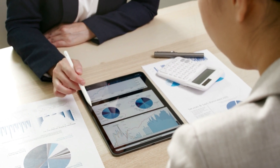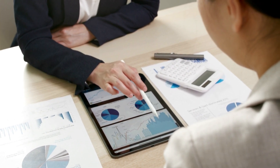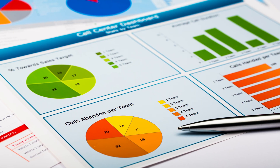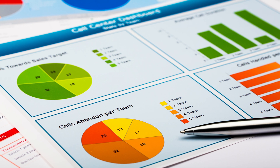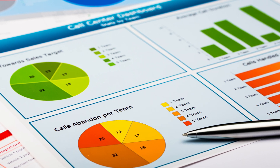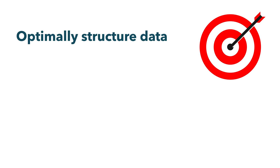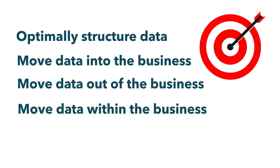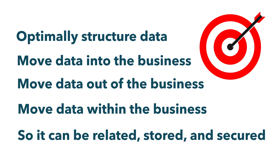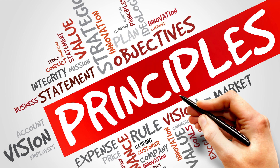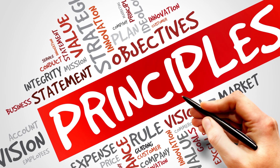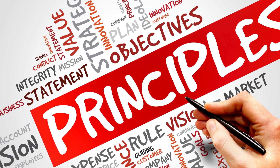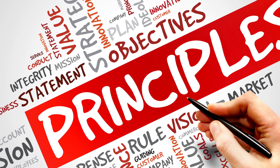Data architecture is as much a business decision as it is a technical one, as new business models and entirely new ways of working are driven by data and information. The goal is to optimally structure data and how it moves into the business, after the business and within the business, so it can be related and connected, stored and secured. Data architecture controls through principles, which are based on best practice and are recommendations and guidelines rather than rules.